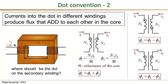Now let's determine the flux direction due to a current in the secondary winding. We arbitrarily try the current entering the winding at the top. Using the right-hand rule, the current direction here is right to left, so curling the fingers in the direction of the current, the thumb points downward. That will be the flux direction Φ₂, whereas Φ₁ is due to the current in the primary winding.